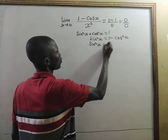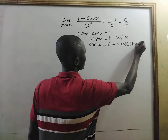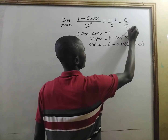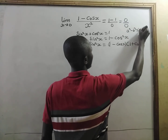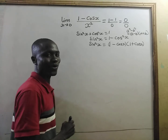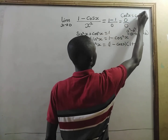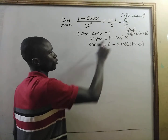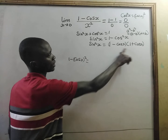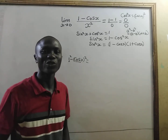And sine squared of x is equal to 1 minus cosine of x times 1 plus cosine of x. Note, this is the difference of two squares. If you have a squared minus b squared, you get a minus b times a plus b. Remember that cosine squared of x is the same as cosine of x, all squared. So if we use 1 minus cosine squared of x, this is our a and this is our b, so we can use difference of two squares.